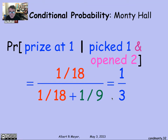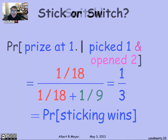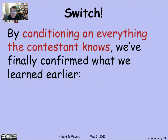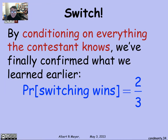Given that you picked door 1 and get to see what Carol did, the probability that the prize is at the door you picked is only one third — which means if you stick, you only have a 1/3 chance of winning. You should switch. If you do, you'll have a 2/3 probability of winning. So when we finally condition on everything the contestant actually knows — what door they picked and what door Carol opened — we correctly deduce that the probability of winning by switching is 2/3.